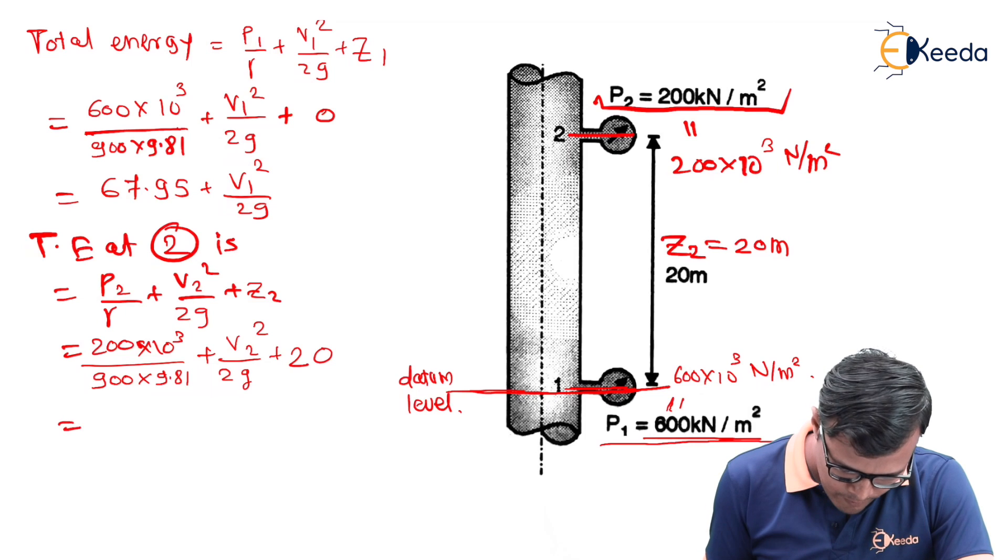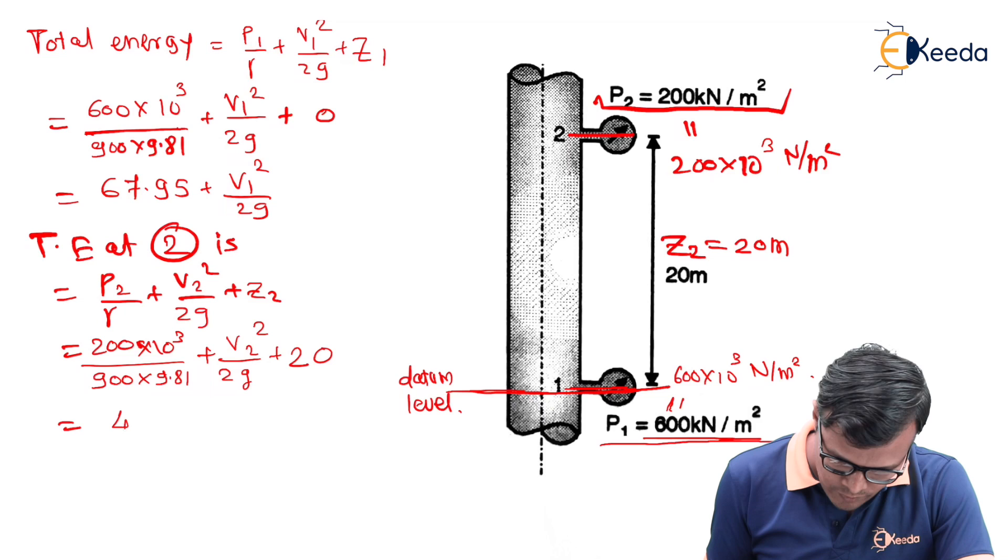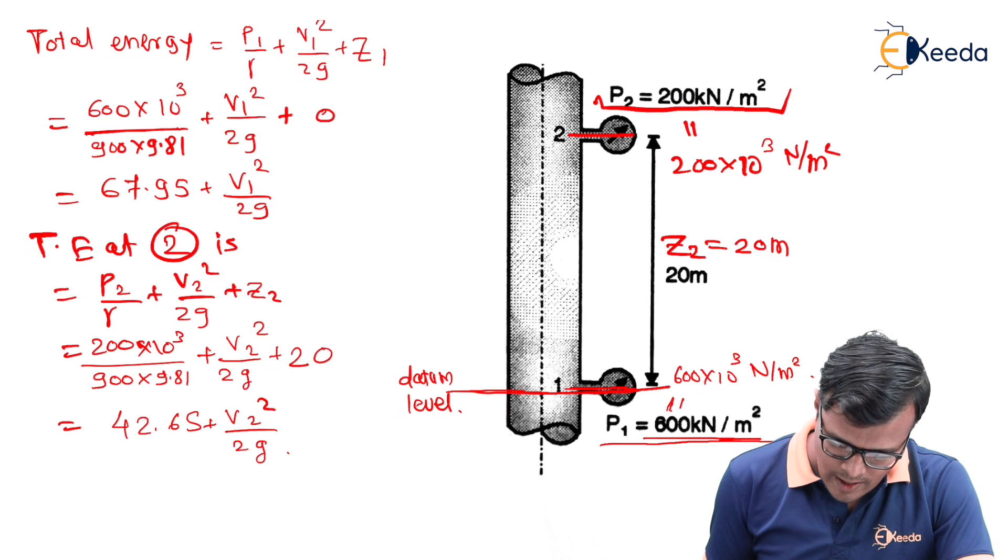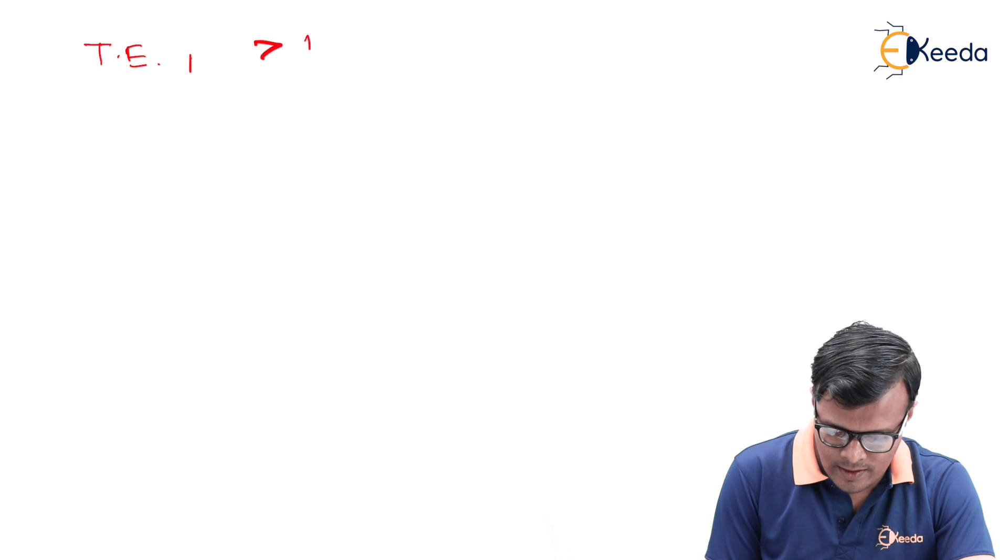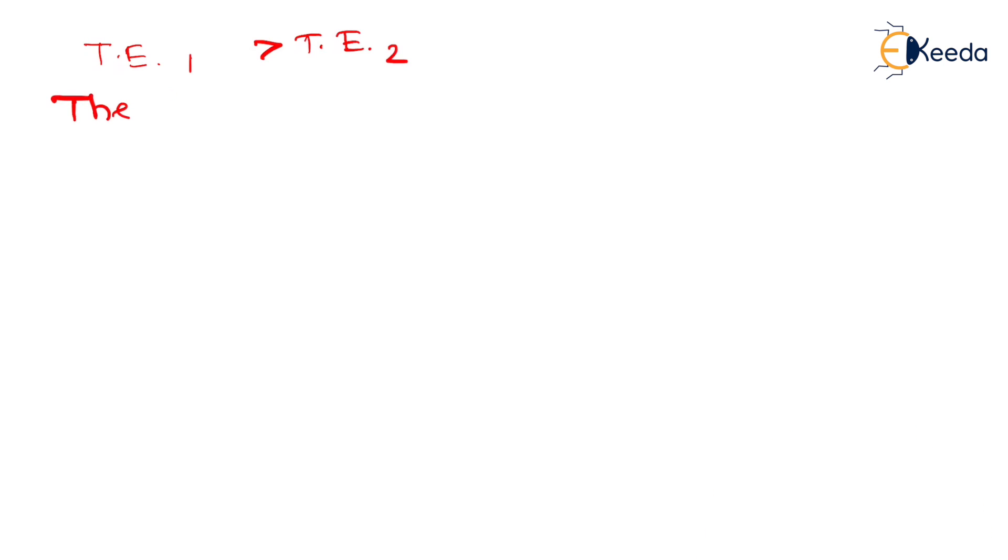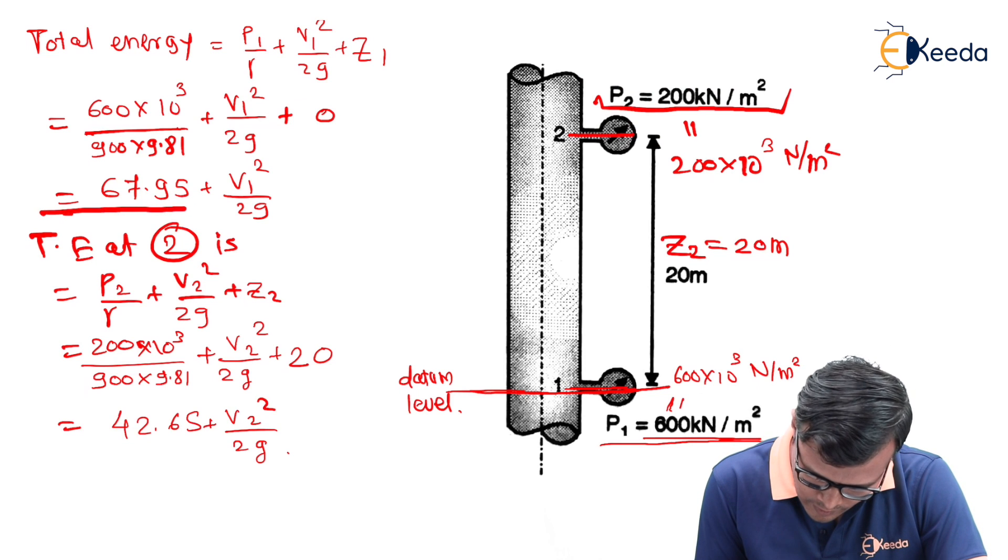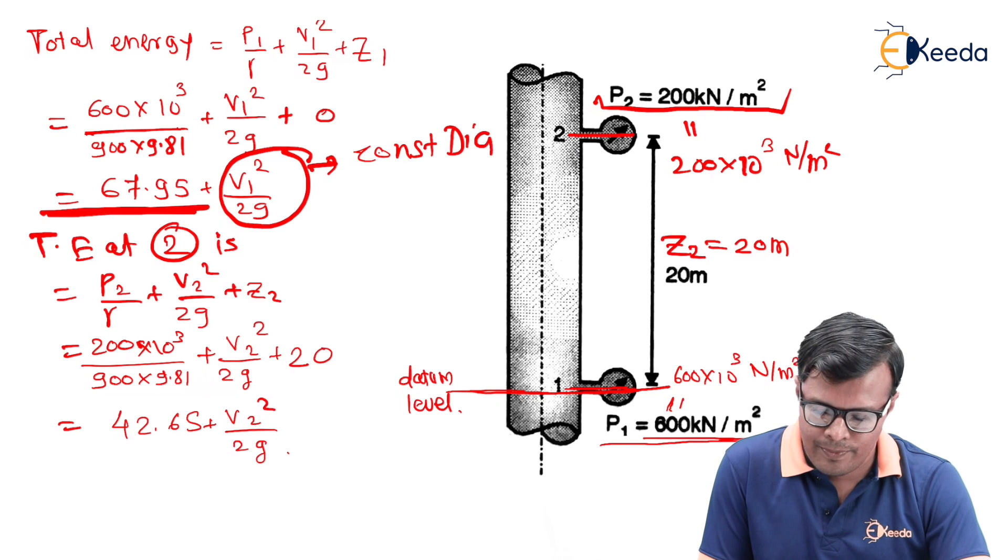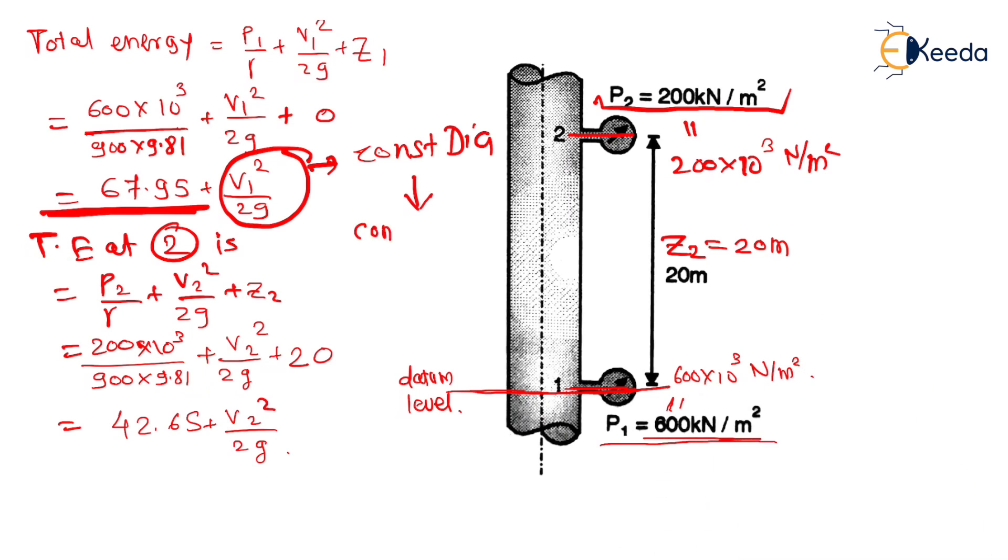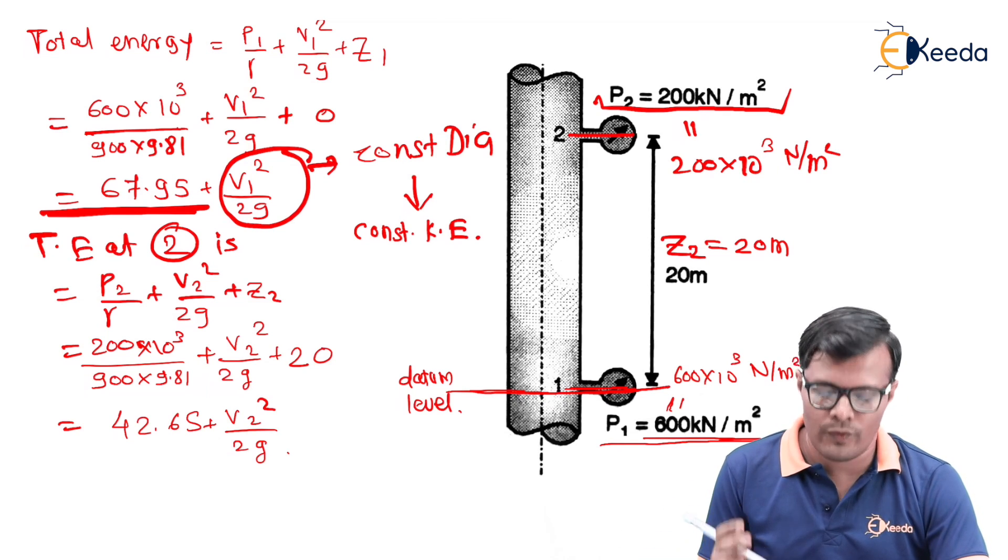Putting the value as 20, we will have the equation as 42.65 plus V2 square upon 2G. As it is clear that total energy at 1 is greater than total energy at 2, the direction of flow is from 1 to 2. Constant diameter corresponds to constant kinetic energy, so V1 square upon 2G will be equal to V2 square upon 2G.